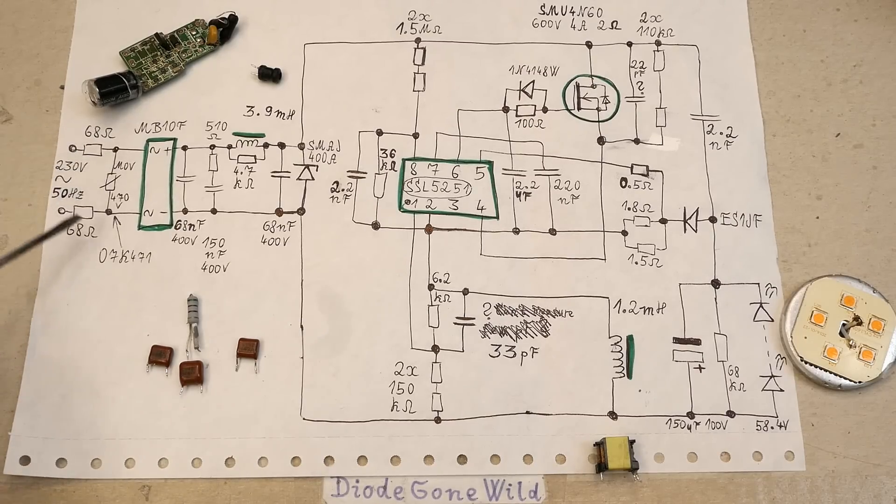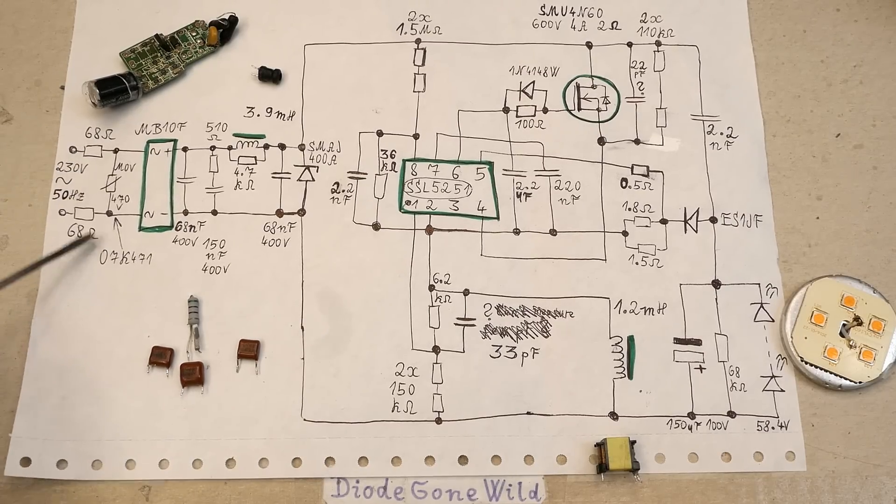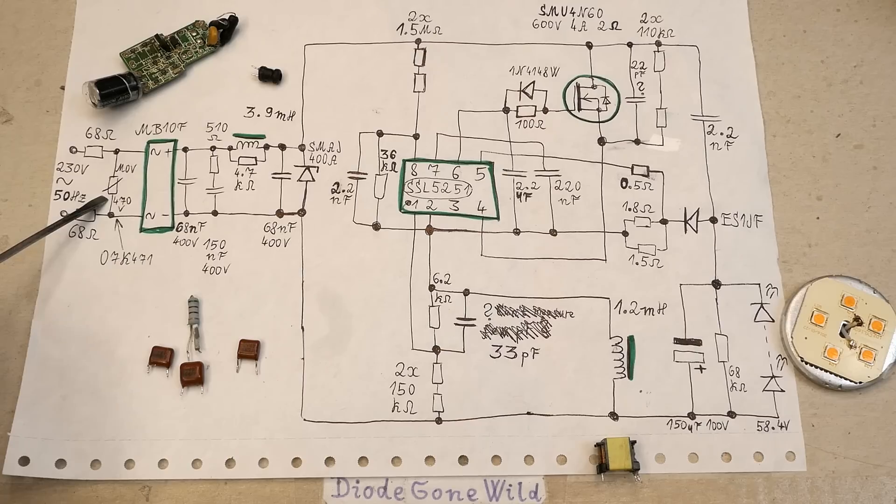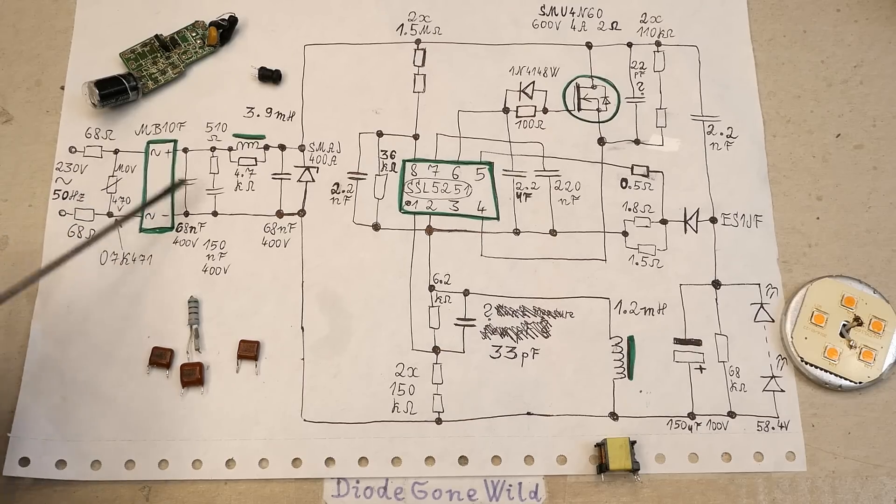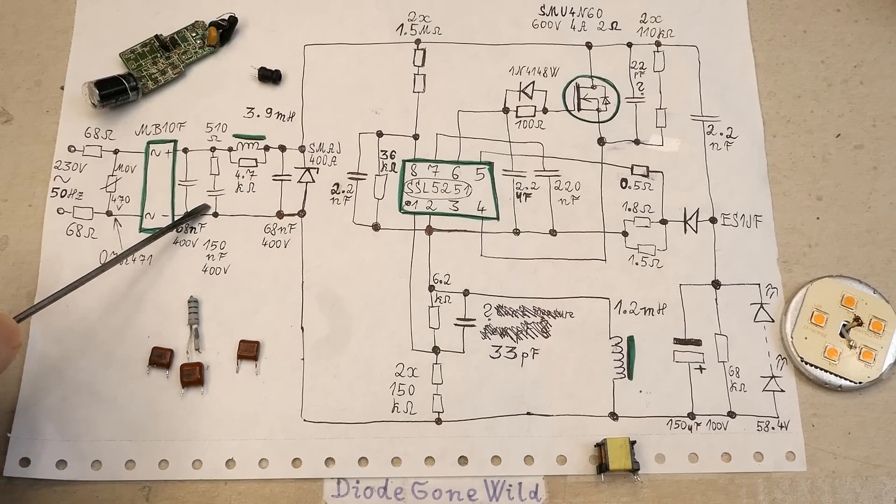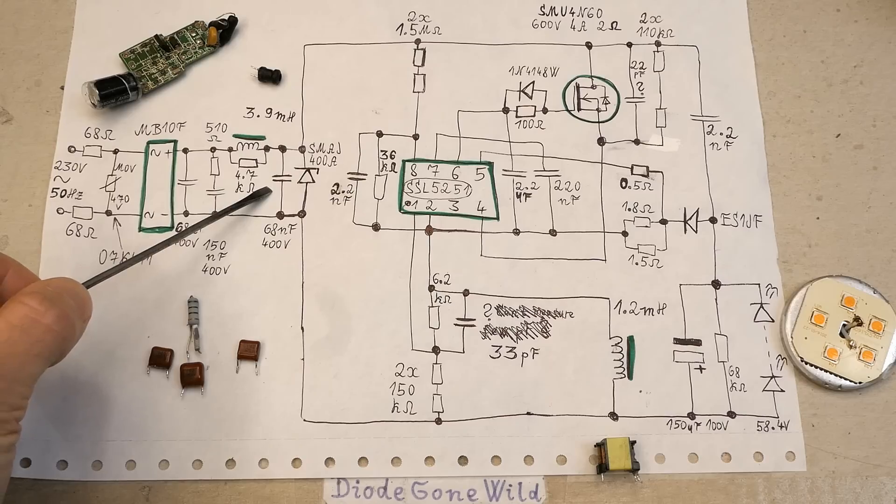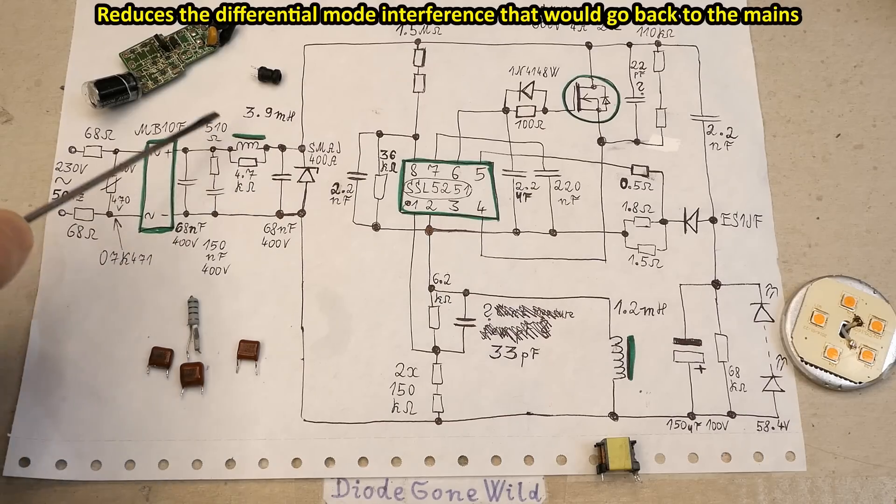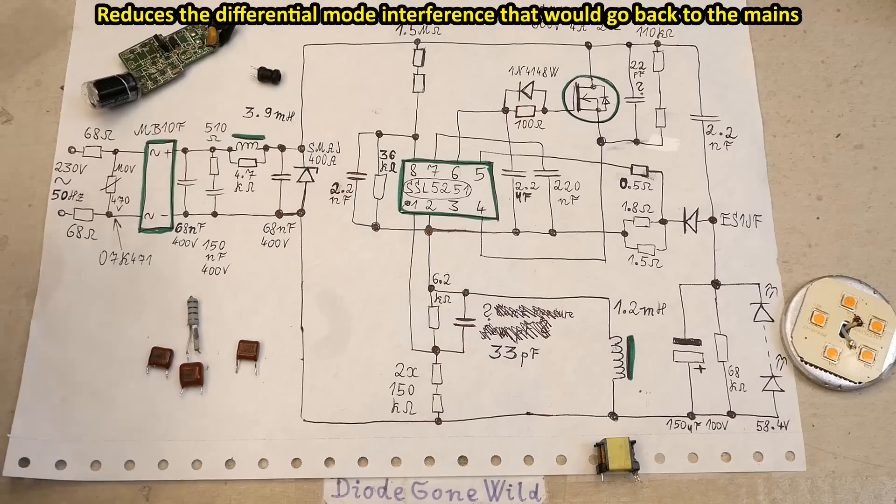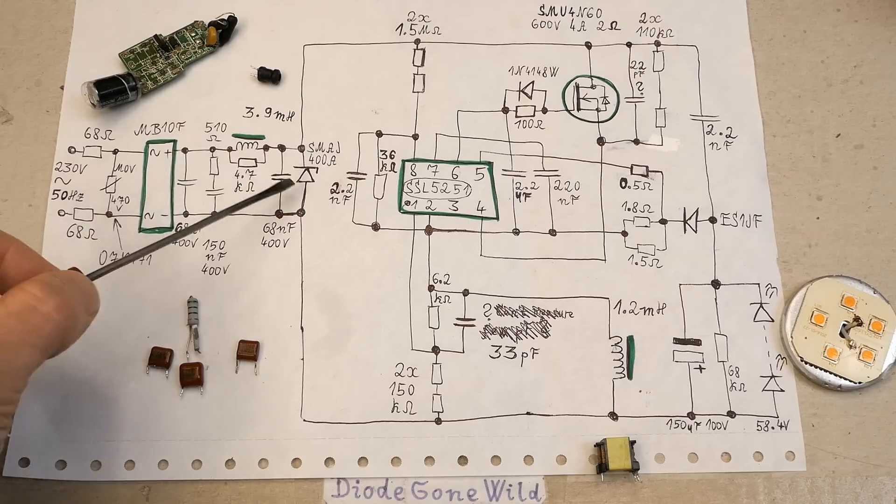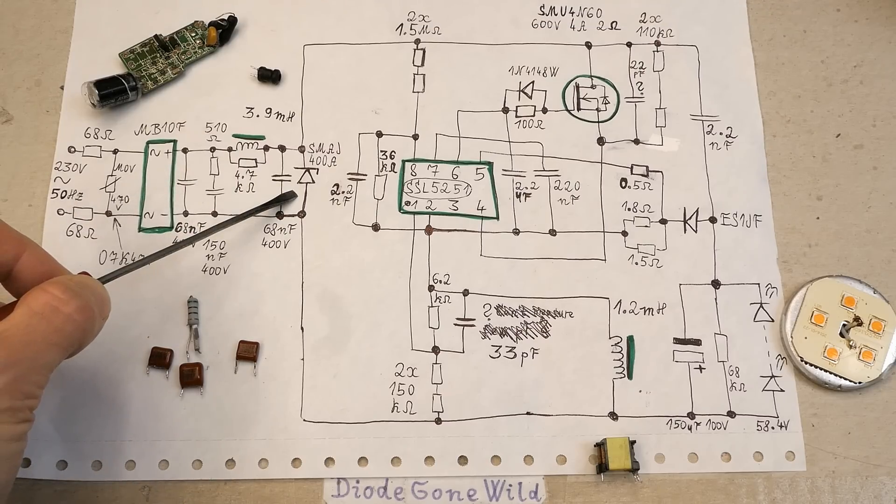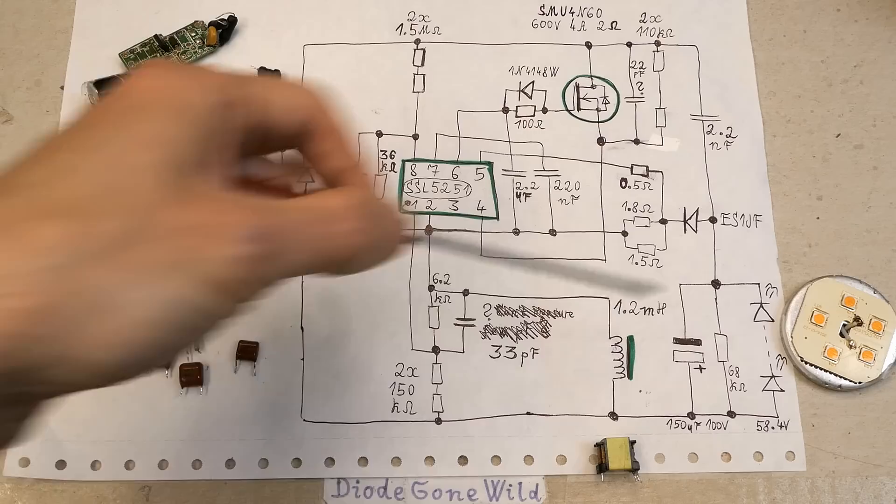The mains comes in here through these inrush limiting fusible resistors. Here's the metal oxide varistor for overvoltage protection, the bridge rectifier, some capacitors but low capacitances, not for smoothing but for high frequency decoupling and interference suppression, as well as this interference suppression inductor and its dampening resistor. One of the capacitors also has a dampening resistor it seems and there's a 400 volt zener for overvoltage protection and then the pulsing DC voltage goes into this circuitry.